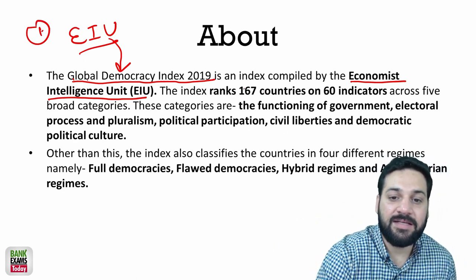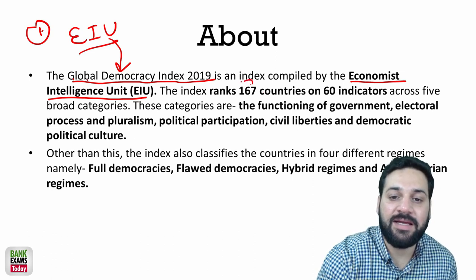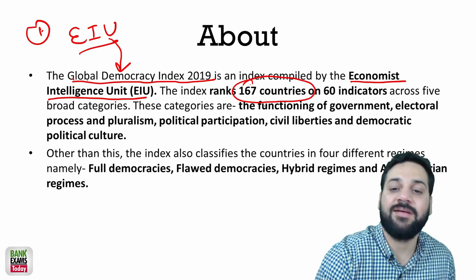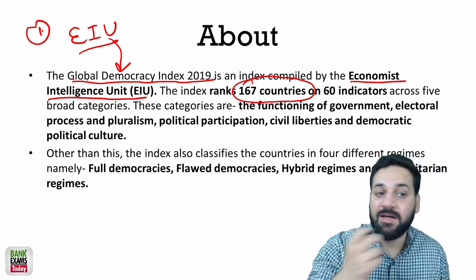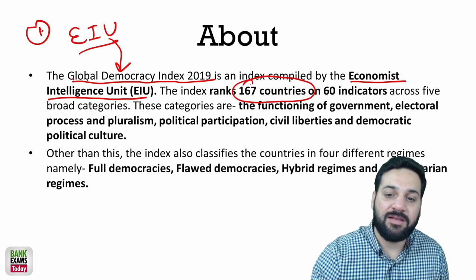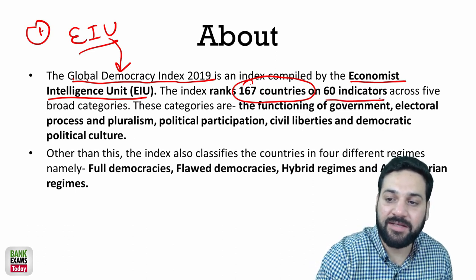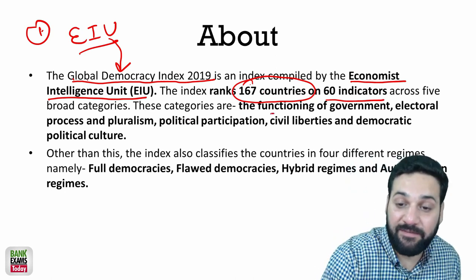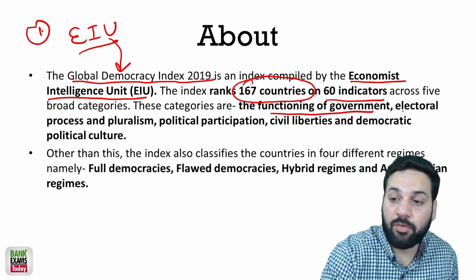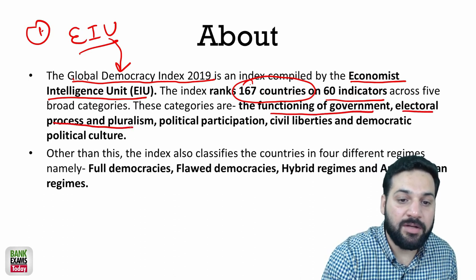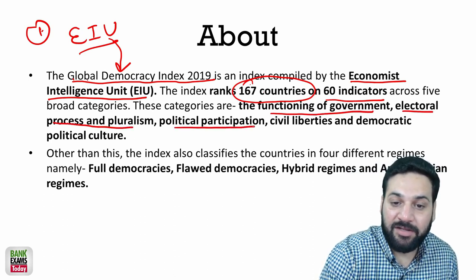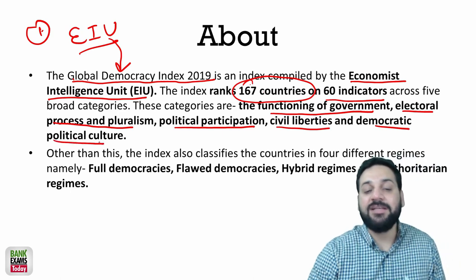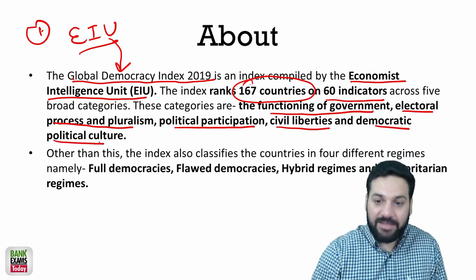The index ranks 167 countries on 60 indicators across five broad categories. These broad categories are: functioning of government, electoral process and pluralism, political participation, civil liberties, and democratic political culture.